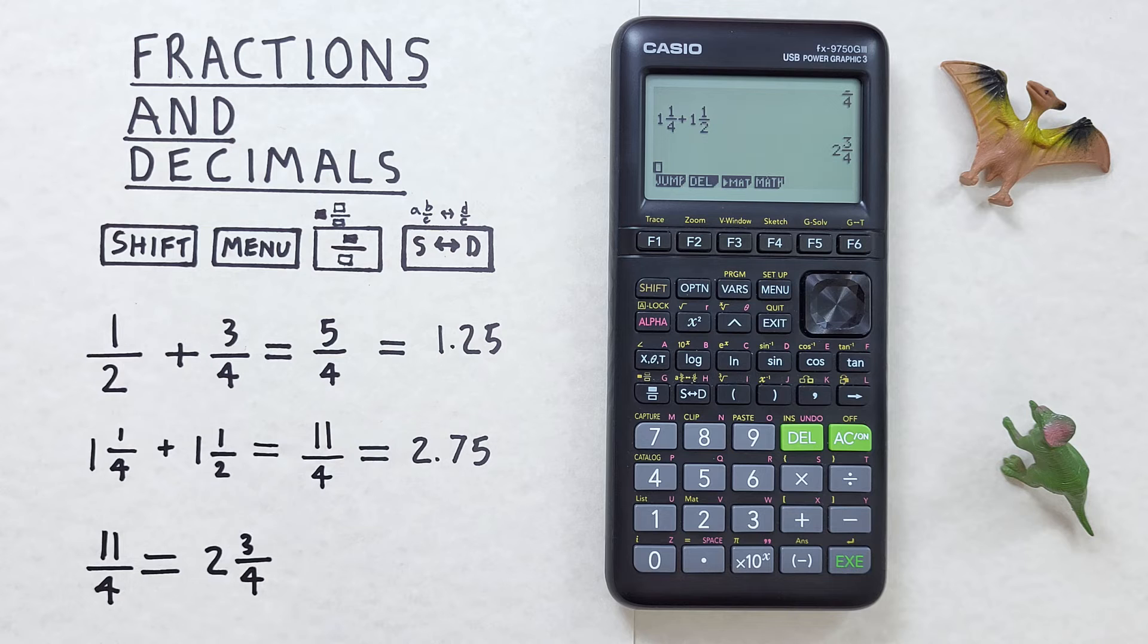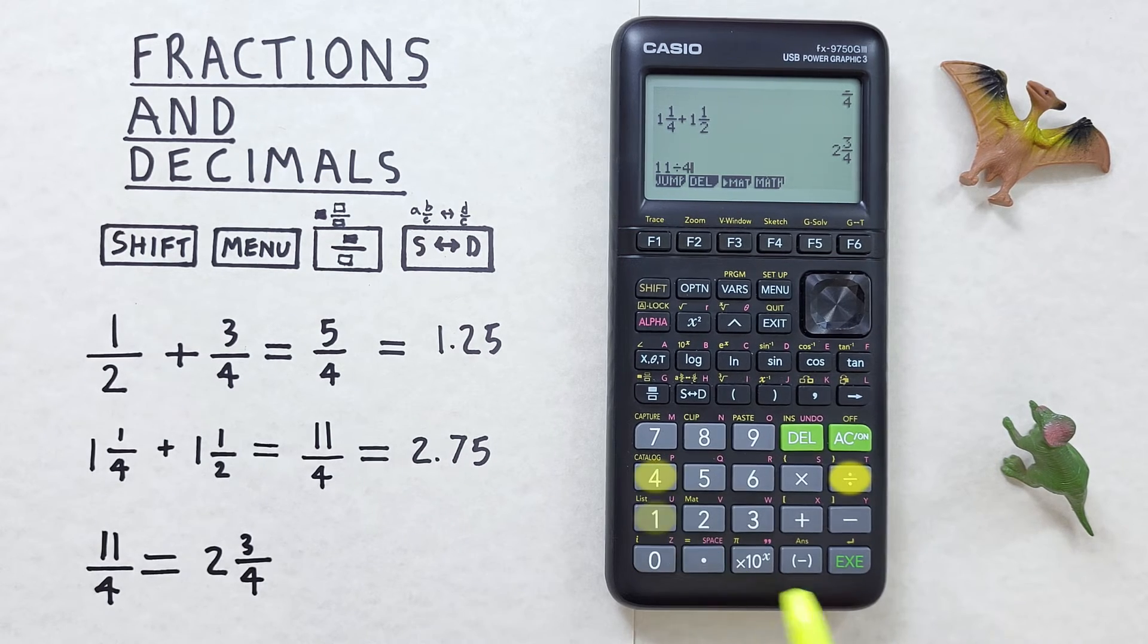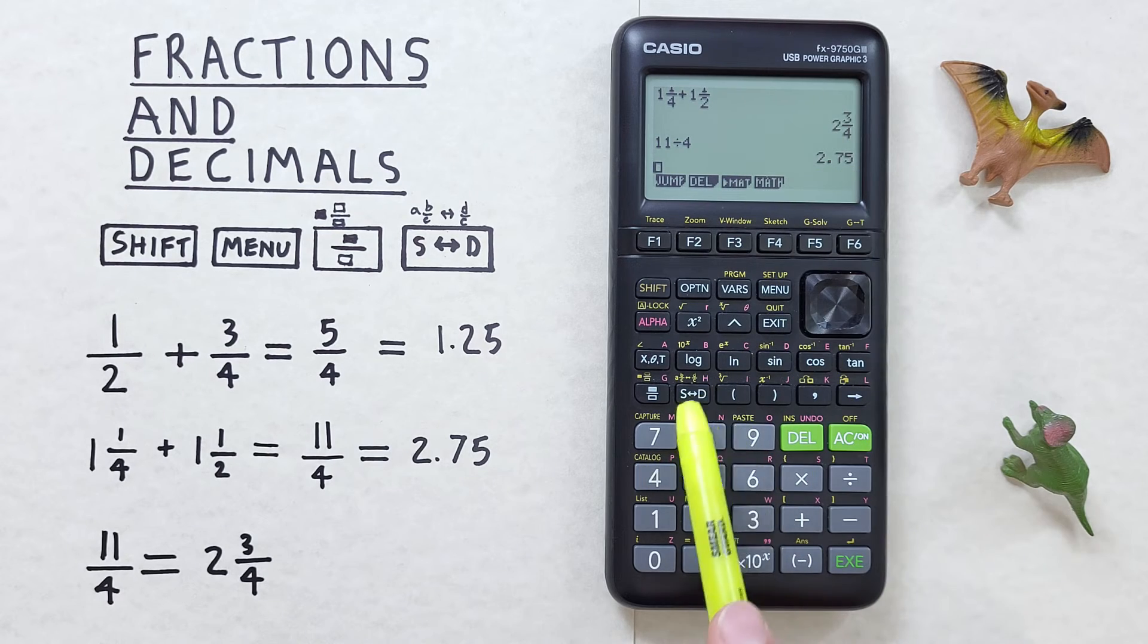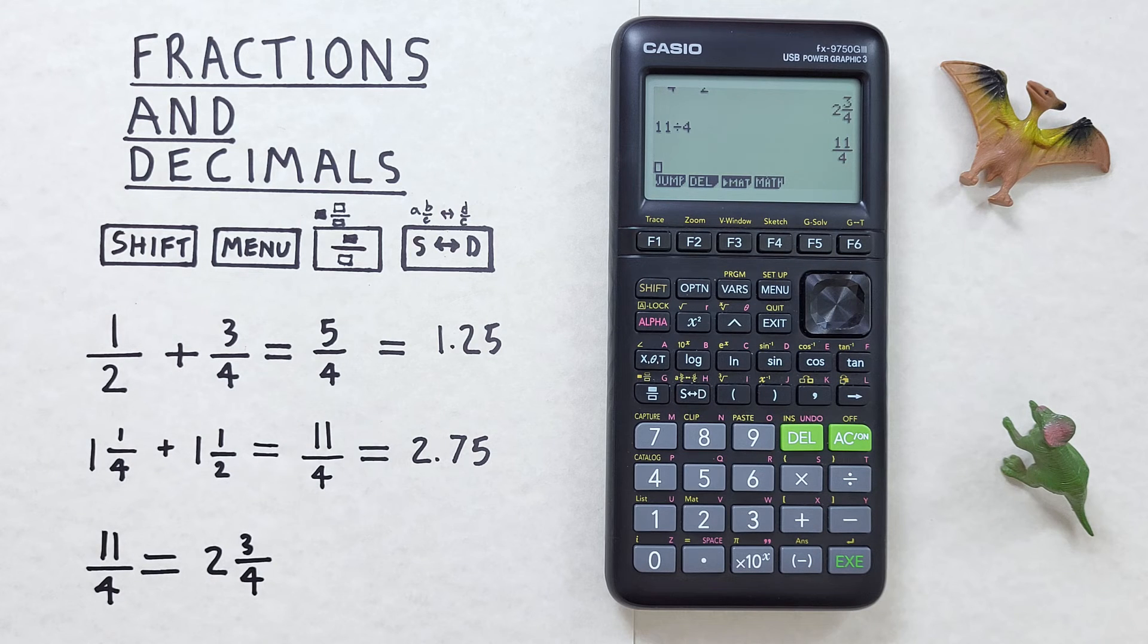As we've seen this calculator gives us an improper fraction as the default result when converting. So if we had let's say 11 divided by 4 equals our 2.75 and converted that to a fraction we got 11 over 4. But what if we wanted to default to the mixed number result of 2 and 3 quarters?